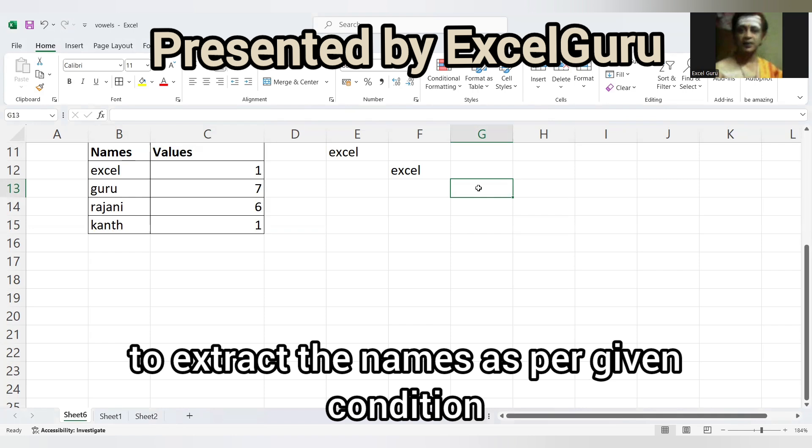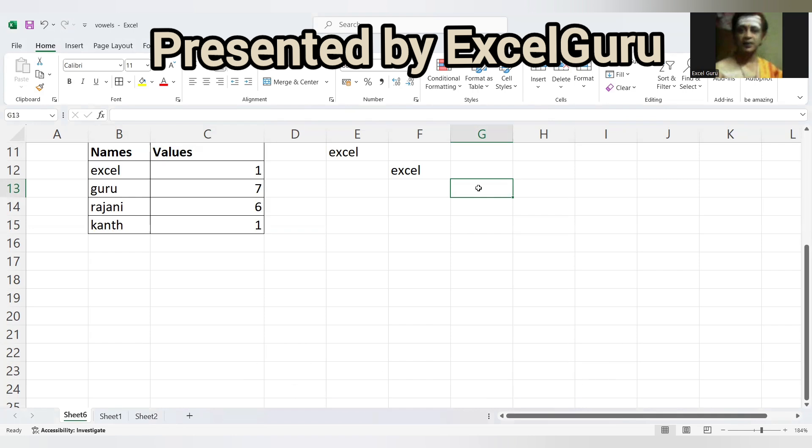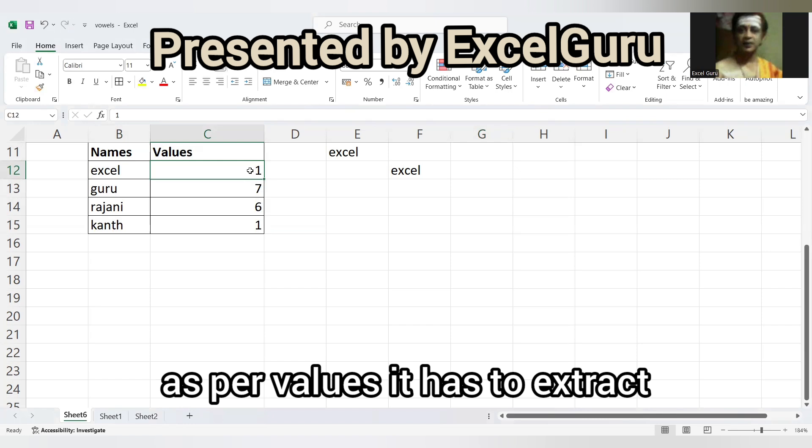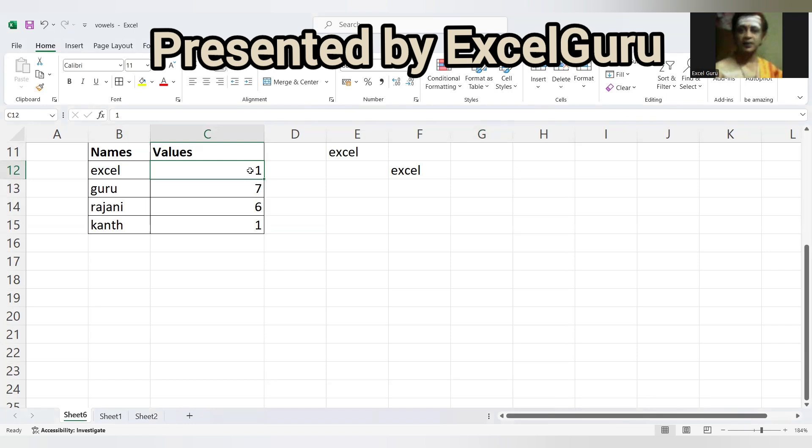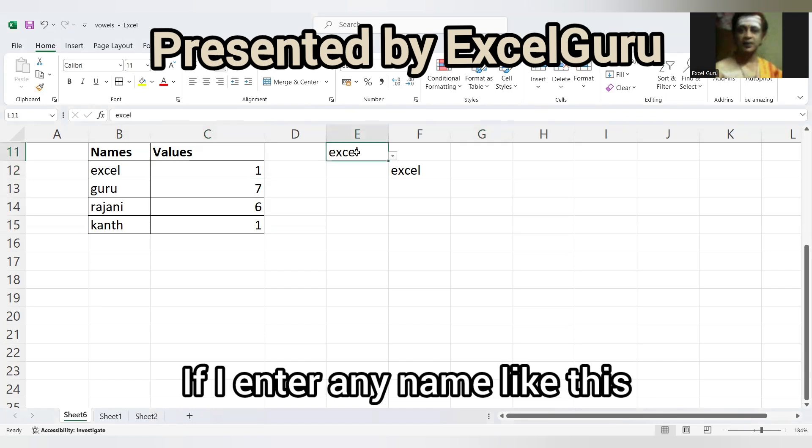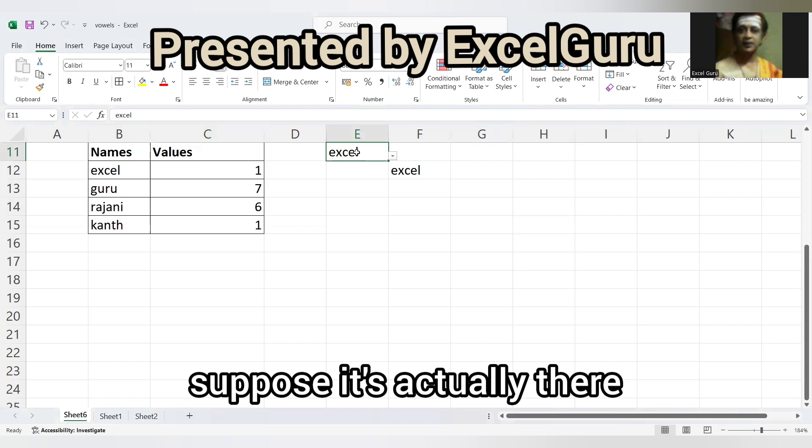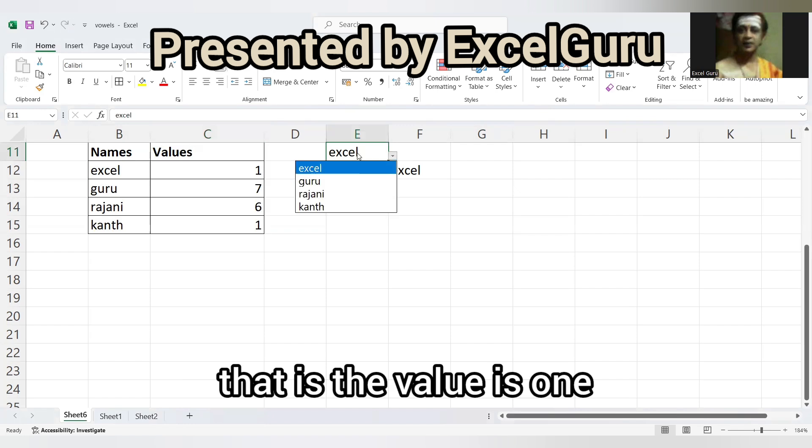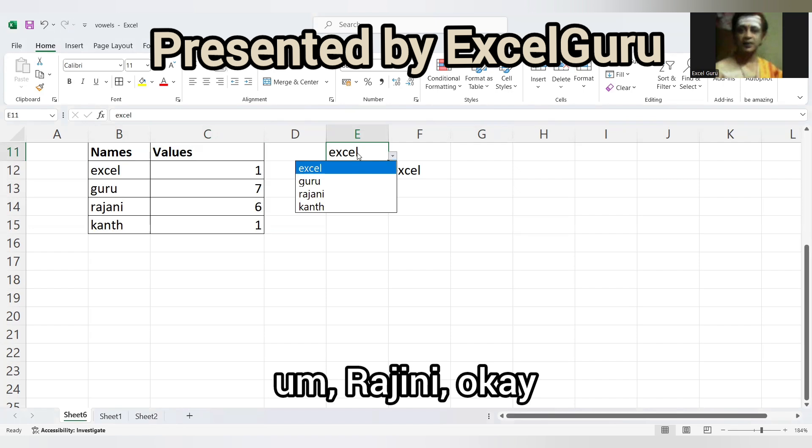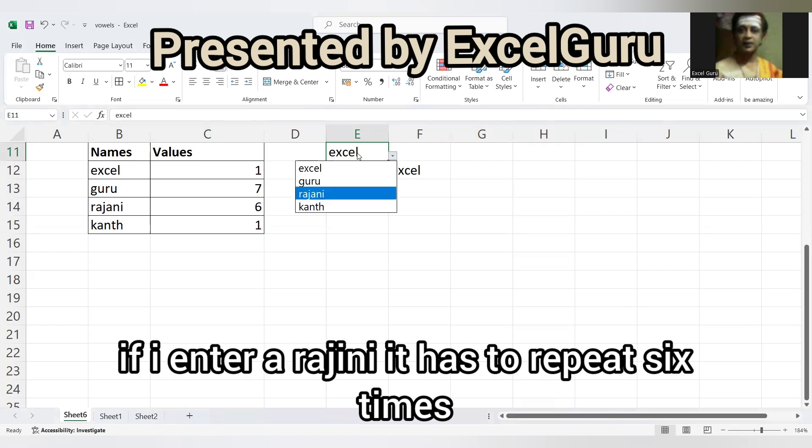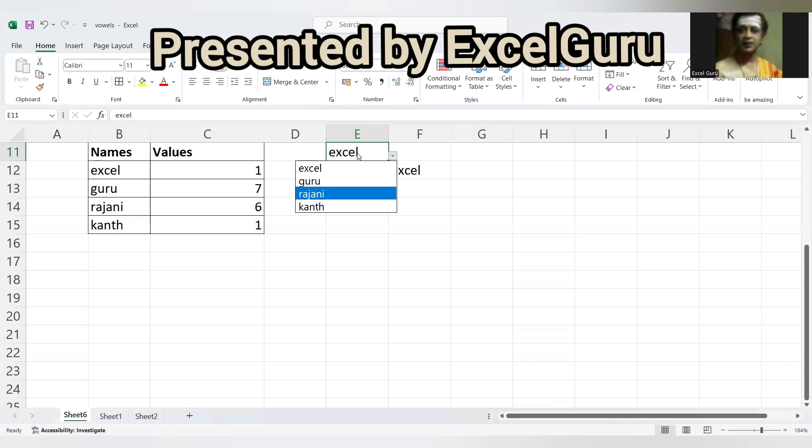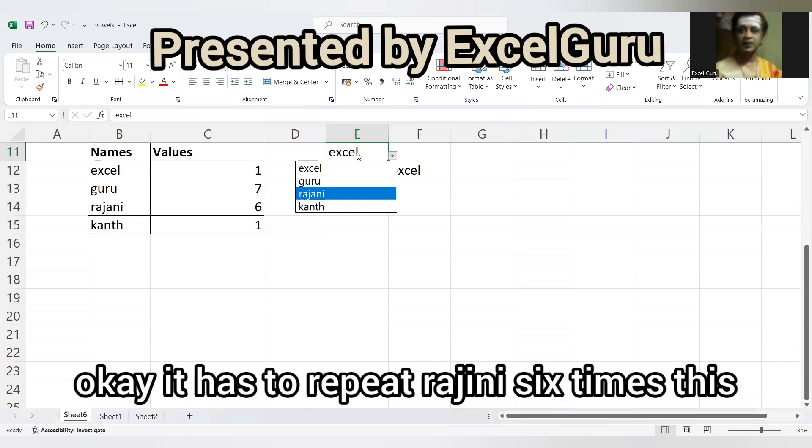That is, as per values it has to extract. If I enter any name like this, suppose the value is one for Excel, if I enter Rajini where the value is six, it has to repeat six times.